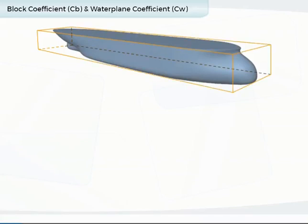The block coefficient, CB, is a comparison of the ship's actual underwater shape at a given waterline out of a rectangular box of the same extreme dimensions. The box's height equals the ship's draft, normally summer draft, and the box's length and breadth equals the hull's overall length and breadth.